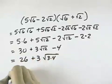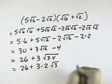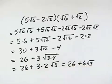Where 4 is a perfect square. So I have 26 plus 3 times the square root of 4 is 2 times the 3 that remains under the square root symbol, or 26 plus 6 times the square root of 3.